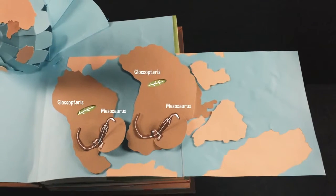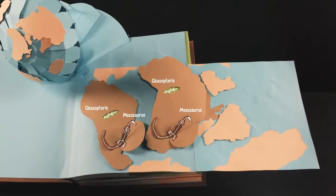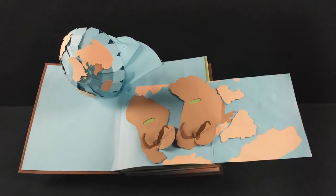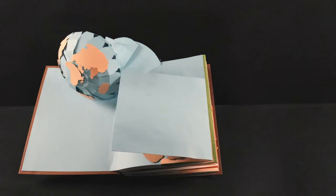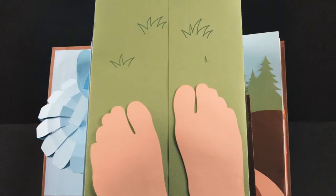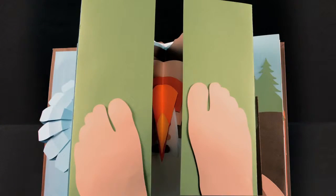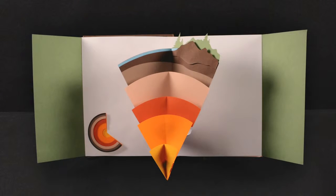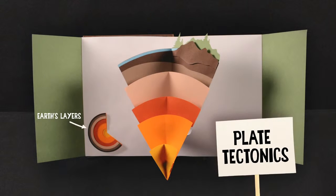However, this evidence does not account for how the continents moved apart. For that, we'll need to take a close look at the earth below our feet. Though you may not realize it, the ground below you is traveling across the earth at a rate of about 10 centimeters per year, or the speed at which your fingernails grow. This is due to plate tectonics, or the large-scale movement of earth's continents.